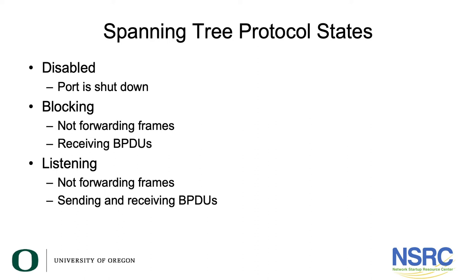Let us talk about spanning tree protocol states of the different ports. First is disabled — this is when a port is shut down. The second is blocking, when spanning tree has decided that a particular port is going to be put in the blocking state. In this state it is not forwarding frames, but it still receives BPDUs, so it's able to calculate spanning tree.